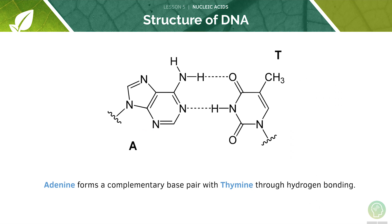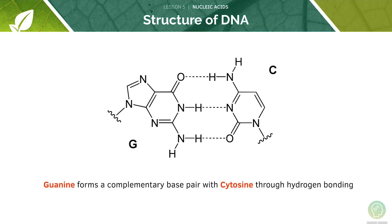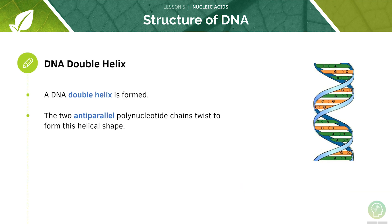Adenine forms complementary base pairing with thymine through hydrogen bonding. Guanine forms complementary base pairing with cytosine through hydrogen bonding. You don't need to know these diagrams for the exam — just remember the pairings. The two anti-parallel polynucleotide chains will twist to form a helical shape called the DNA double helix.